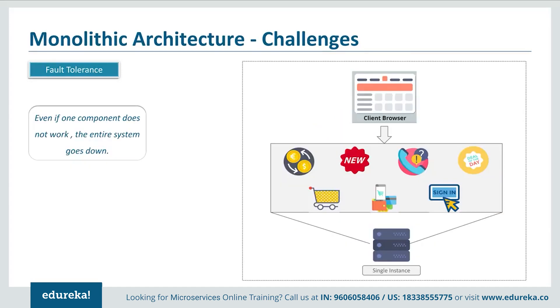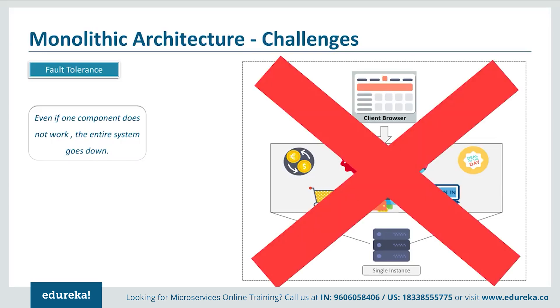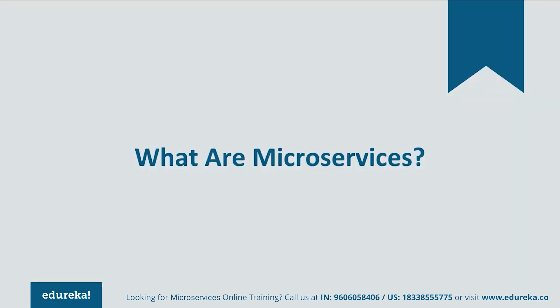The third challenge is Fault Tolerance. Consider the shopping cart application — if even one feature doesn't work, the entire system goes down. This not only creates a problem for users, but also for developers as they have to rebuild everything again. To avoid these challenges, developers decided to shift from monolithic architecture to microservices.